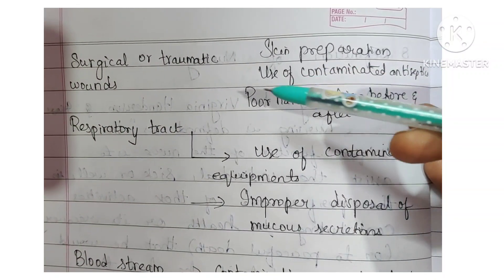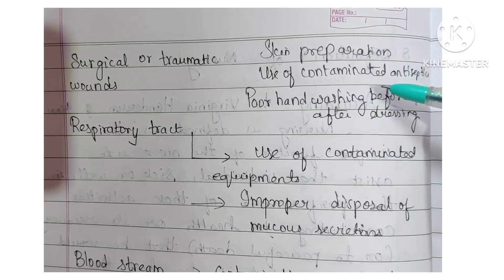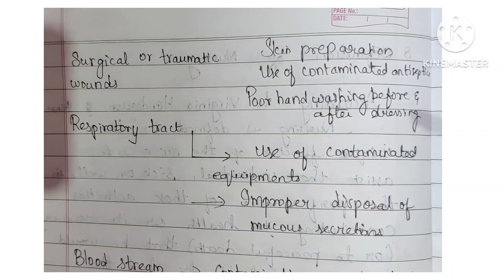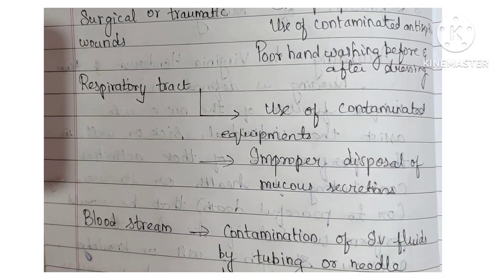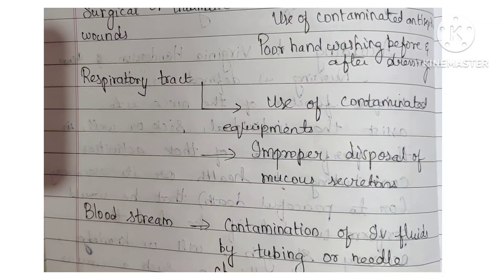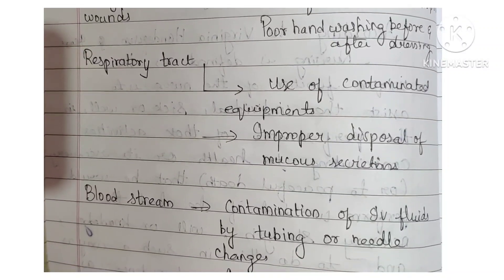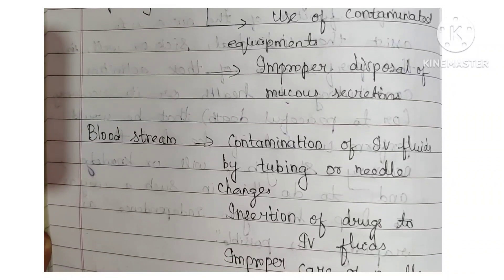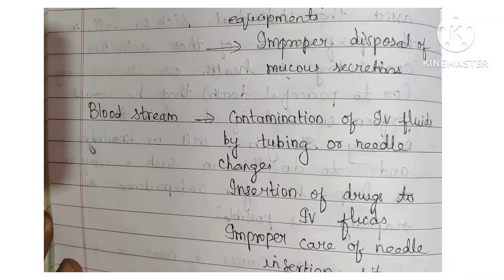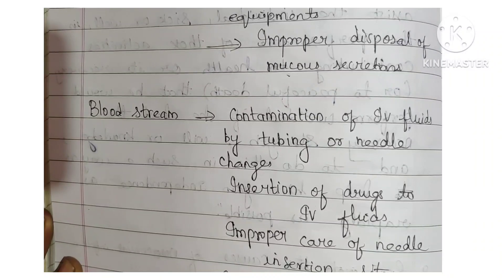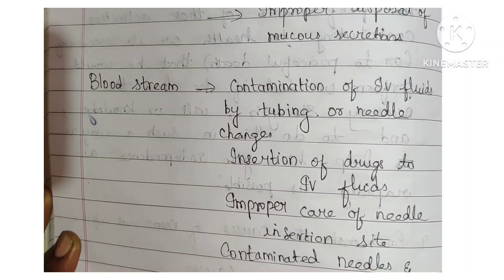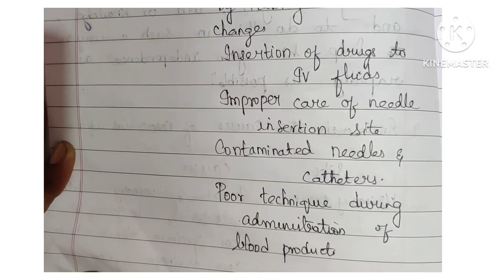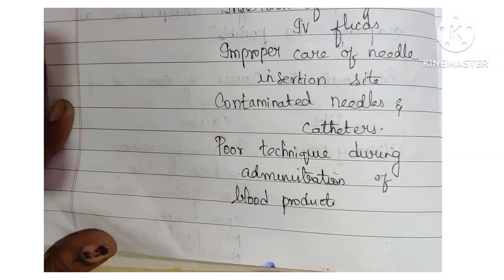Surgical or traumatic causes: poor skin preparation, use of contaminated antiseptics, poor hand washing before and after dressing. Respiratory tract: use of contaminated equipment, improper disposal of mucus secretions. Bloodstream causes: contamination of IV fluids by tubing or needle changes, insertion of drugs into IV fluids, improper care of needle insertion site, contaminated needles and catheters, and poor technique during administration of blood products.